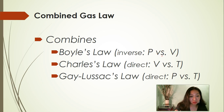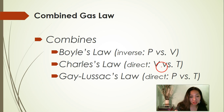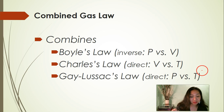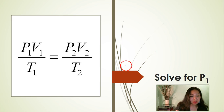For Charles's law, the relationship is directly proportional between volume and temperature, so as the temperature increases volume increases, and as the volume decreases temperature decreases. Gay-Lussac's law also has a direct relationship between pressure and temperature, so as the pressure increases the temperature increases, and as the pressure decreases the temperature decreases.